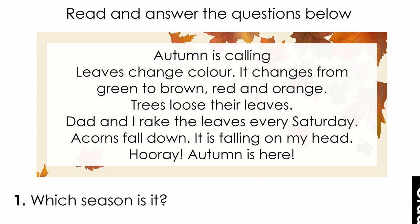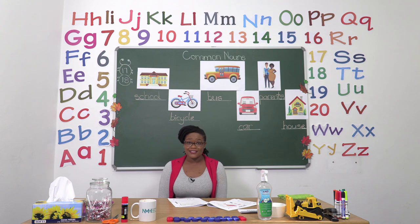Autumn is calling. Leaves change colour. It changes from green to brown, red and orange. Trees lose their leaves. Dad and I rake the leaves every Saturday. Acorns fall down. It is falling on my head. Hooray! Autumn is here. Now that we have read the passage a second time, I'd like you to please answer the questions. If you're not sure you can always go back into the passage and read it again. Make sure that you answer all the questions, and for number six, choose a season and tell us why.